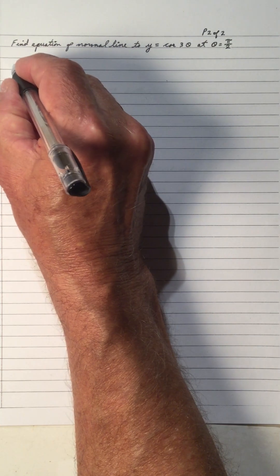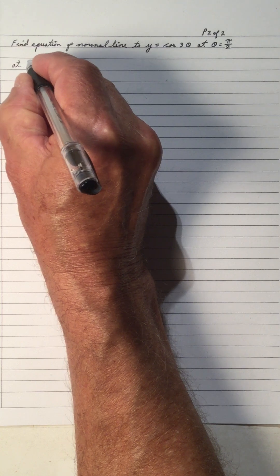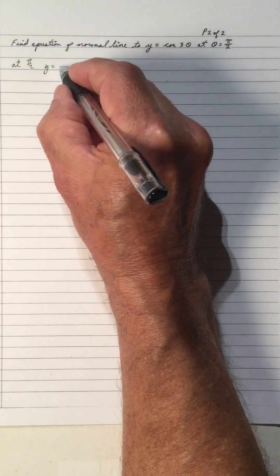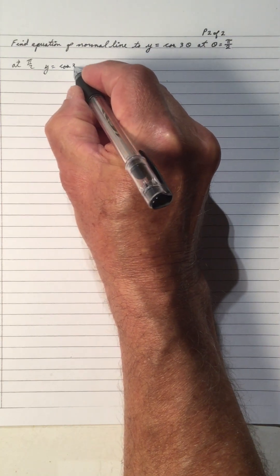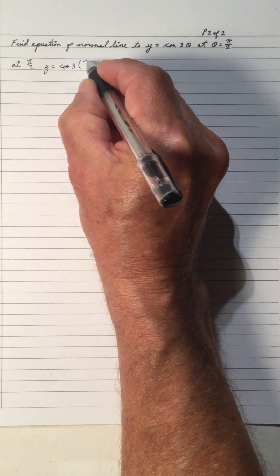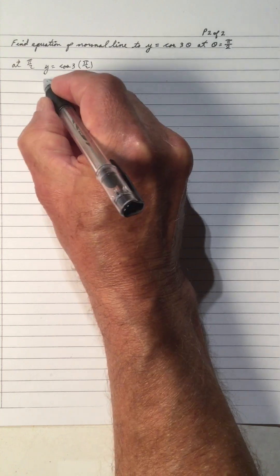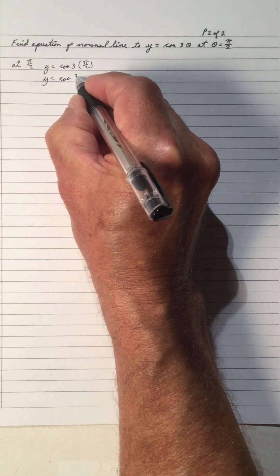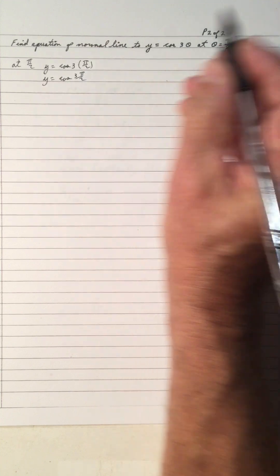Let's find the point first at pi over 2. We're going to substitute pi over 2 and we get y equals cos of 3 pi over 2, so y equals cos 3 pi over 2.